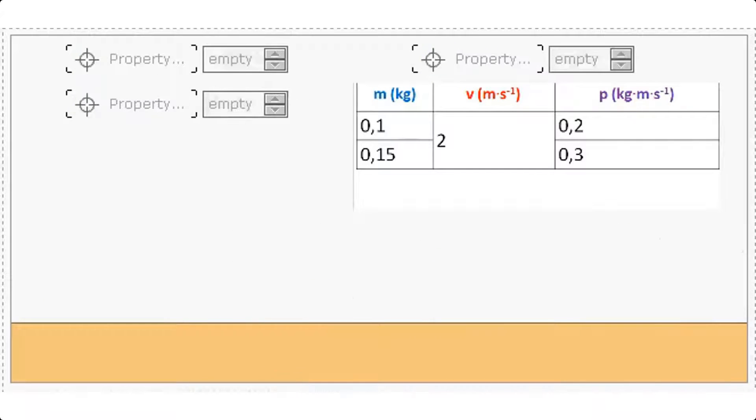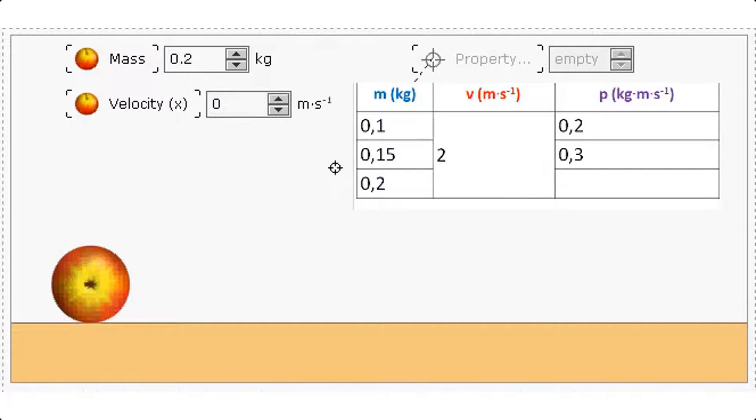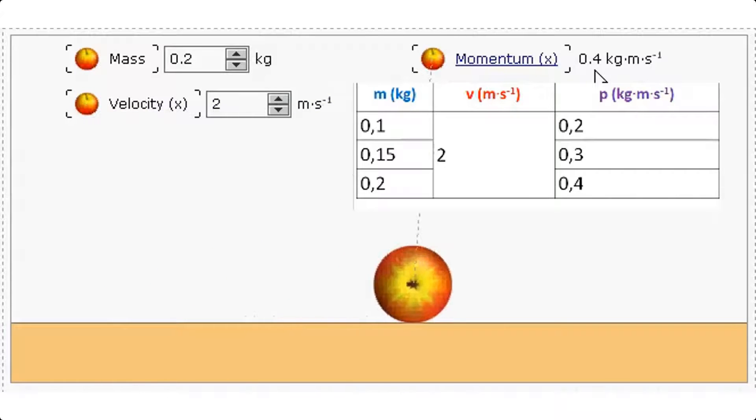What about an even heavier fruit? Well apples aren't usually heavier than watermelons but this one is. Its mass is 0.2 kilograms. Let us give it a velocity of 2 meters per second and see whether that causes the momentum to be higher or lower than the watermelons. 0.4 kilogram meter per second. What do you notice?